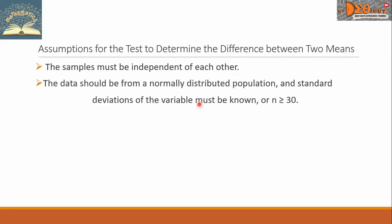Second, the data should be from a normally distributed population, and standard deviations of the variable must be known, or n, the sample size, must be greater than or equal to 30.